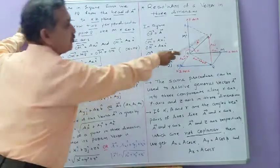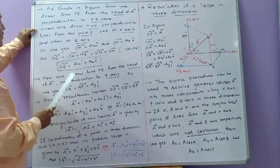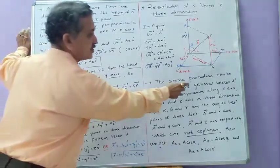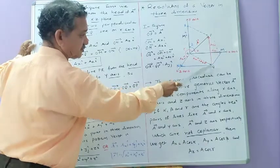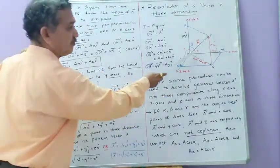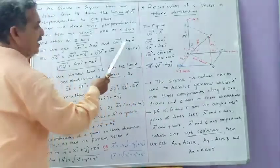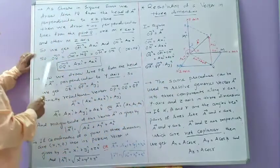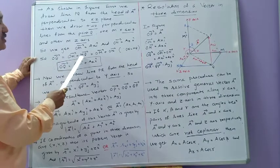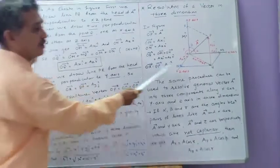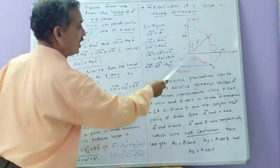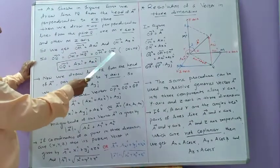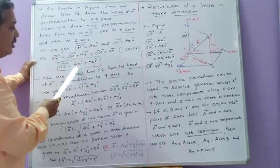First, we draw a line through the head of vector A perpendicular to the x-z plane to get point Q. From point Q, we draw two perpendicular lines — one to the x-axis giving vector OM as AₓI, and one to the z-axis giving vector ON as AzK. The sum of these two vectors, vector OM plus vector ON, by the parallelogram method gives the resultant diagonal vector OQ. So vector OQ equals AₓI plus AzK.